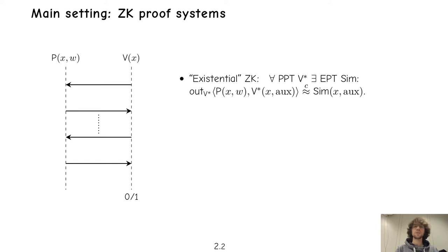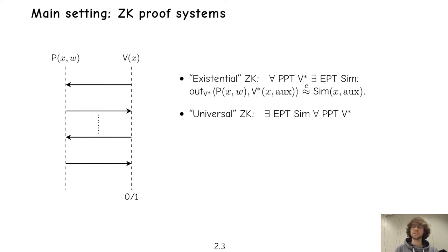A stronger notion of zero-knowledge is universal zero-knowledge. Here the order of the quantifiers are swapped, so the simulator is universal for all adversaries. There exists one simulator and it is given the code of the adversary, then it works for any adversary.